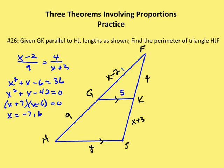If x is negative seven, we end up with negative values for both GF and KJ, so negative seven is an extraneous solution. Therefore x equals six. With x equal to six, GF becomes four and KJ becomes nine.